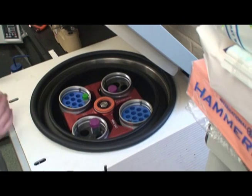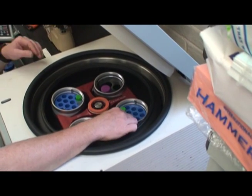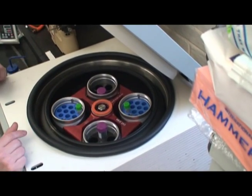Now, smaller test tubes can be inserted into the centrifuge, and once again, the buckets can be slightly rotated to ensure that the tubes are directly across from each other.